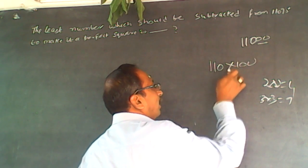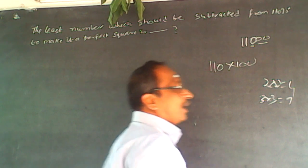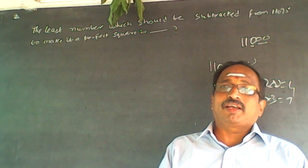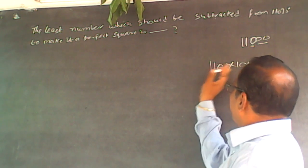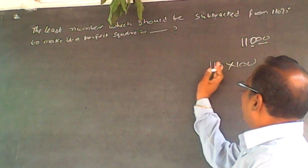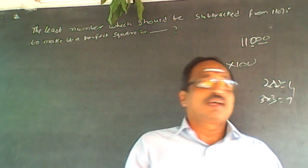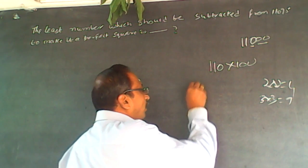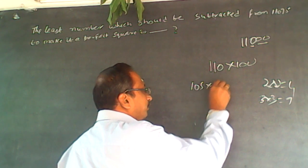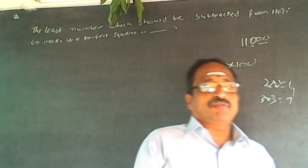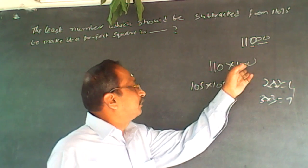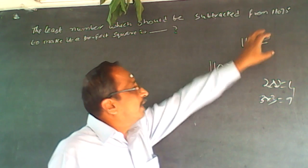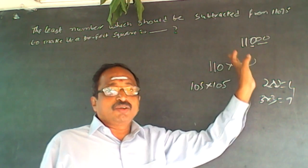So this 20 goes here as 100 and 210 comes here to 100, then it is a square number. So reduce this by 5 and add this by 5. So what it means: 105 into 105. Reduce this by 5 and add this by 5, it will become a perfect square. Find out what the square of this, then do the adjustments accordingly.